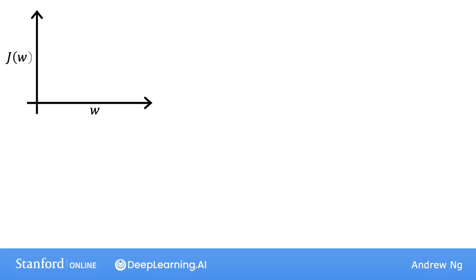So this is like our previous example where we had temporarily set b equal to zero. With one parameter w instead of two, you can look at two-dimensional graphs of the cost function J instead of three-dimensional graphs. Let's look at what gradient descent does on this function J of w.